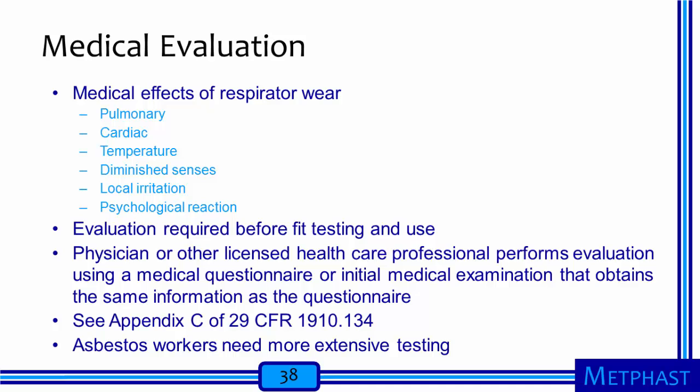Let's talk in greater detail about key elements of a respiratory protection program, starting with medical evaluations. Wearing a respirator can adversely affect the health of some workers—it can exacerbate pulmonary and cardiac conditions, increase heat stress, influence vision, hearing, and sense of smell, irritate the skin locally, and cause adverse psychological reactions. These effects must be addressed by performing a medical evaluation prior to fit testing and use of a respirator. The medical evaluation usually takes the form of a physician or other licensed healthcare professional evaluating a medical questionnaire filled out by a potential respirator wearer, with requirements specified in Appendix C of the standard. Asbestos workers are required to have more extensive medical testing than other wearers.